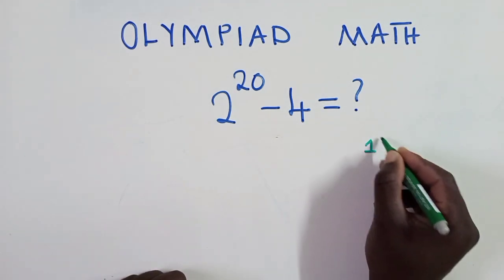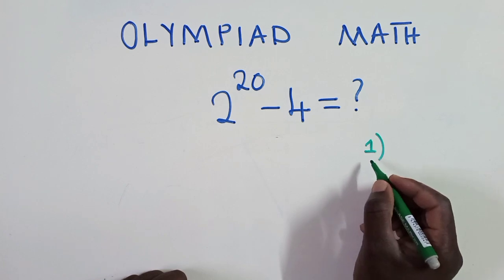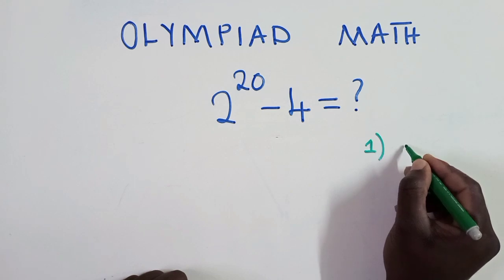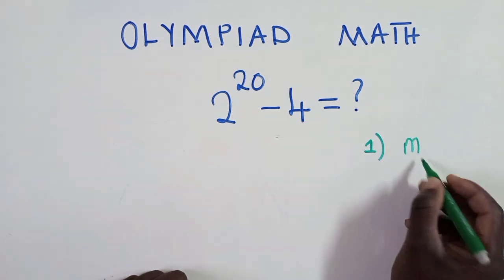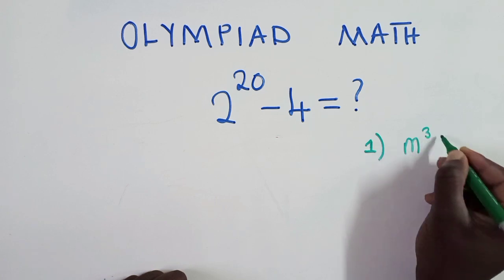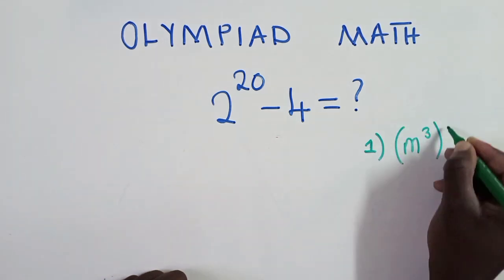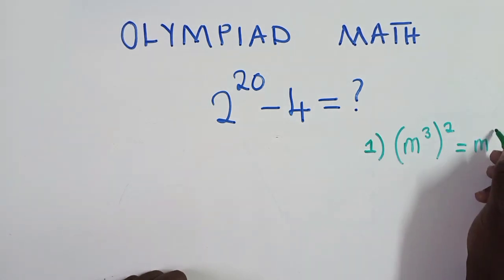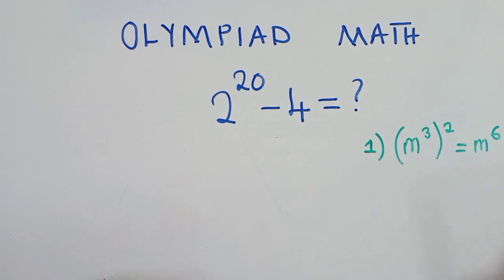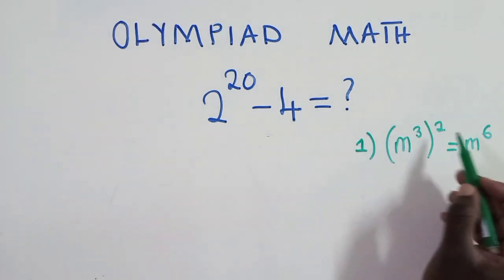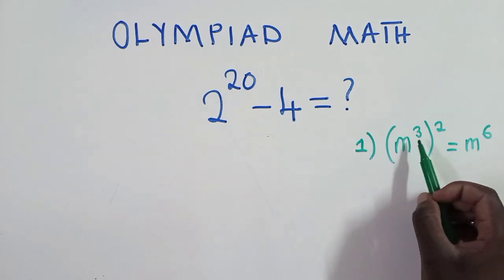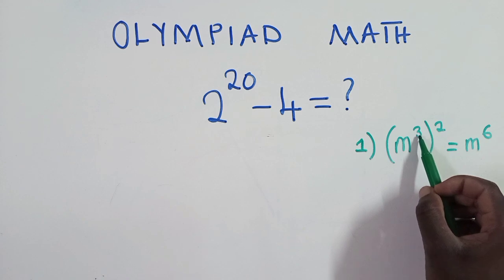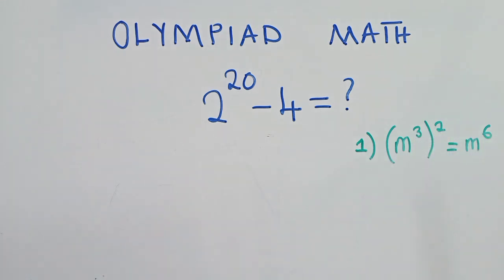Step number one, we must apply difference of two squares. And actually before we apply the difference of two squares, let's understand this law of indices. So when you've got m to the power 3, and a 2 there, this is the same as m to the power 6. You see what I've written? So here the laws of indices say that when you've got a power here raised to the power, so this will be 3 times 2, which will give us a 6.